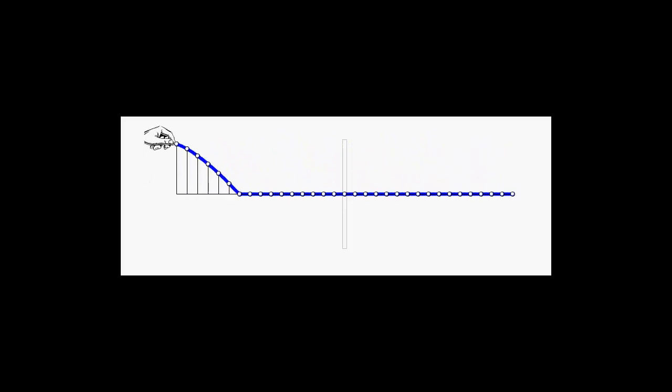The element of the rope to the right of this end also begins moving but with a time lag. Element after element of the rope begins moving in the positive y direction and back to the initial position, just the same way as the left end. Each element is disturbed by the neighbor to its left and in turn disturbs the neighbor to its right.